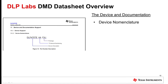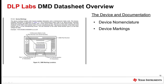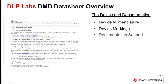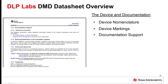Section 11 describes device and documentation information. The device name, or nomenclature, is shown — this is how to read the part number and decipher specifics about the orderable part. The device markings show the actual markings present on the bottom side of the DMD itself. The documentation support includes listing and links to related documentation, how to receive notification of documentation updates, community resources, as well as trademarks and ESD cautions.